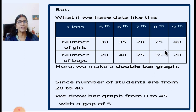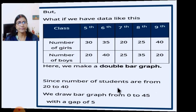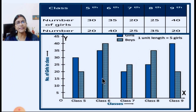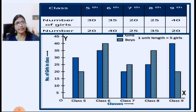Here, since the number of students are from 20 to 40, we draw the bar graph from 0 to 45 with a gap of 5. Let us draw a double bar graph. Double bar graph looks exactly like a bar graph. The only difference is here you have two data sets, and we can represent both in one graph. You need graph paper to draw this — you will take a graph notebook and plot this double bar graph.